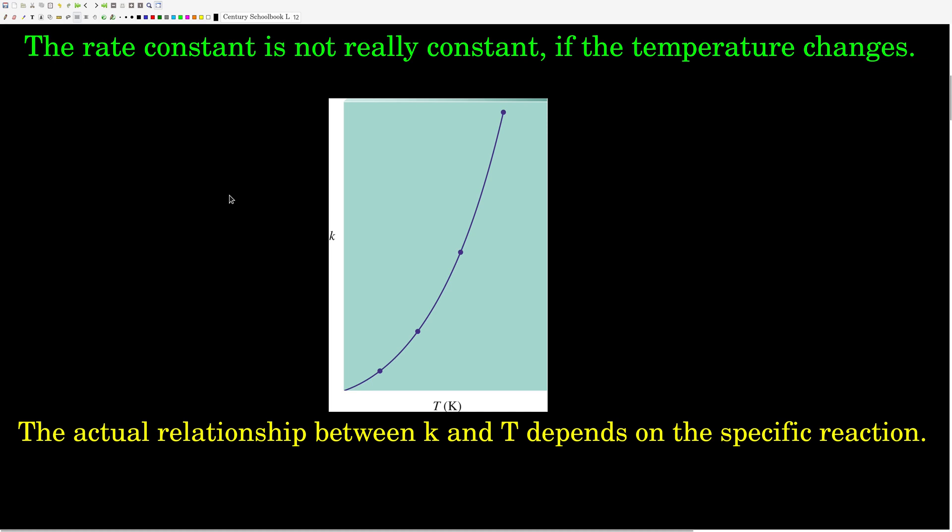First of all, it ends up that the rate constant is not really a constant. If the temperature changes, the value of the rate constant changes. How it changes with temperature depends upon the specific chemical reaction we're talking about. But in general, as temperature increases, the rate constant increases. And it's not a linear relationship either. That's what this graph shows.